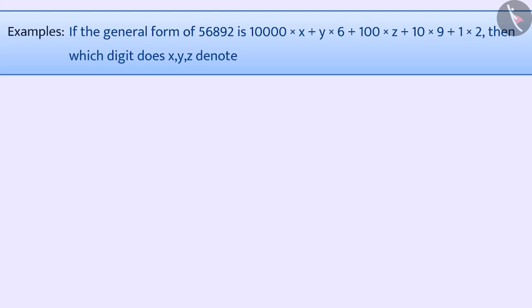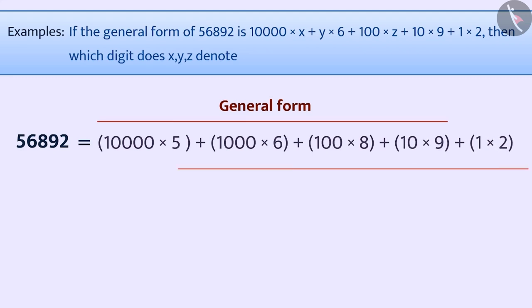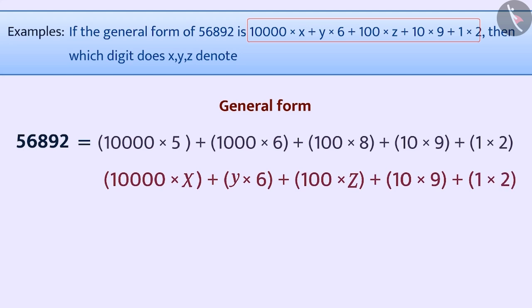We can write the general form of 56,892 as 10,000 into 5, plus 1,000 into 6, plus 100 into 8, plus 10 into 9, plus 1 into 2. If we compare it with the given general form, we can see that x is equal to 5, y is equal to 1000, and z is equal to 8.